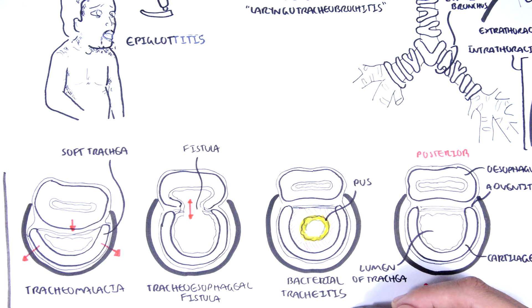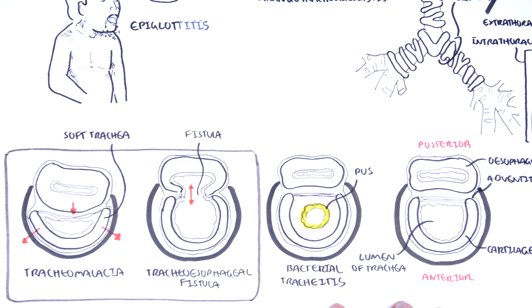Inhalation or aspiration of a foreign body is another common cause of acute stridor. The foreign body is usually food, it can obstruct anywhere along the respiratory tract and can thus present as an inspiratory stridor, expiratory stridor or both.